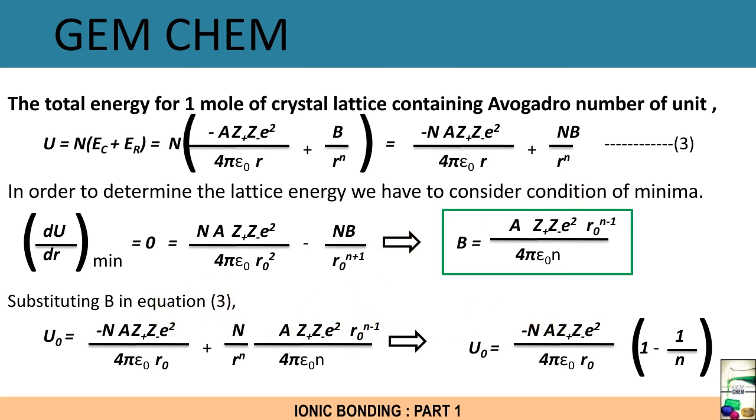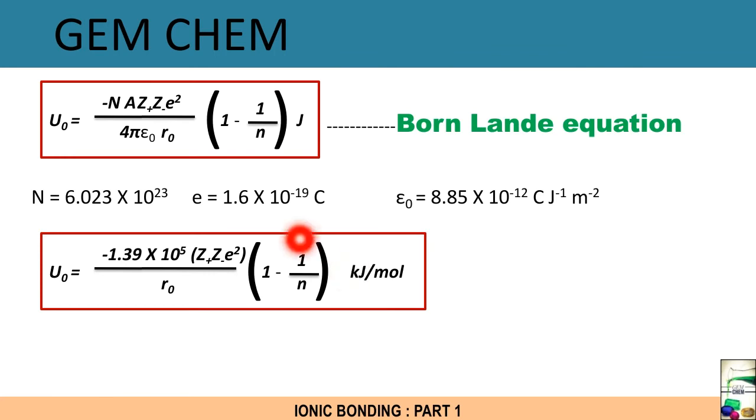On substituting the B in equation 3, which is present here, we get the ultimate expression of U₀, which is our Born-Landé equation. So this equation is being obtained, and this is the Born-Landé equation: U₀ = -NAZ+Z-e²/(4πε₀r₀) × (1 - 1/n), where r₀ is put in the unit of meter. On substituting the value of N, e, as well as ε₀ and π, we can get the value as U₀ = -1.39×10⁵ × (Z+Z-)/r₀ × (1 - 1/n) kilojoule per mole, where r₀ is expressed in picometer.